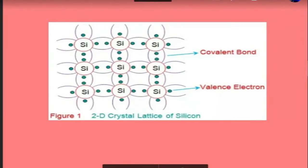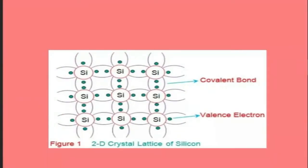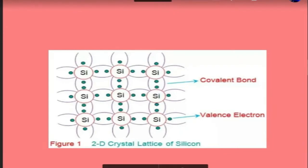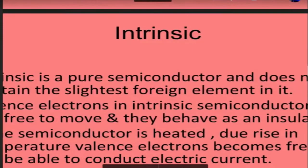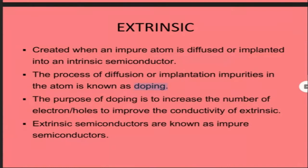Moving ahead with this — these are the valence electrons you can see. Now we are going to add impurity into this crystal lattice. There are two types of impurity. The process of diffusion or implantation of this impurity into the atom is known as doping. There is lightly doped and highly doped — higher amount of doping means higher amount of impurity added into our pure semiconductor.